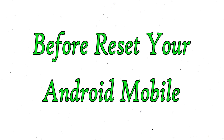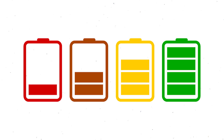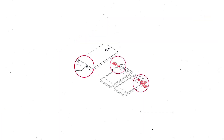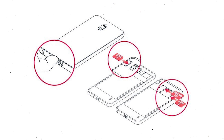Before resetting your mobile, make sure the battery is properly charged. If less than 50%, charge your mobile first. You need to make sure that the data on your device is backed up so you do not lose valuable photos or documents. Reset deletes all your mobile data, so you should back up all important data and remove your SIM and SD card.